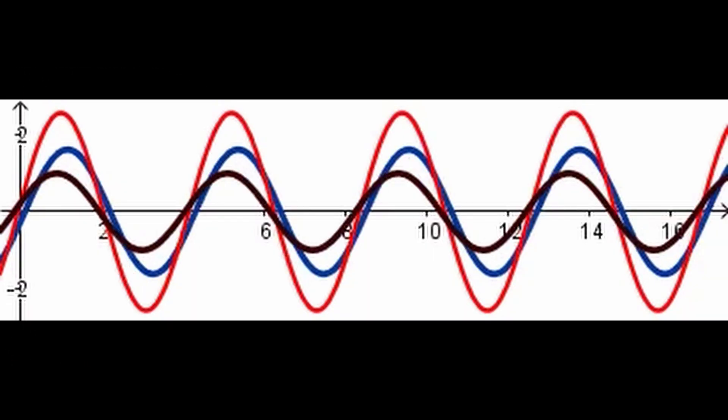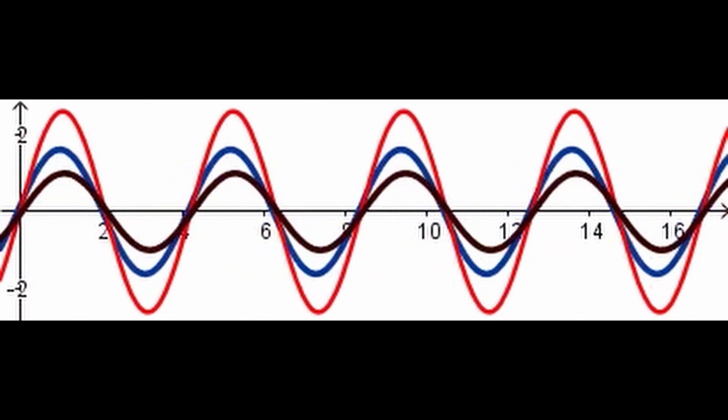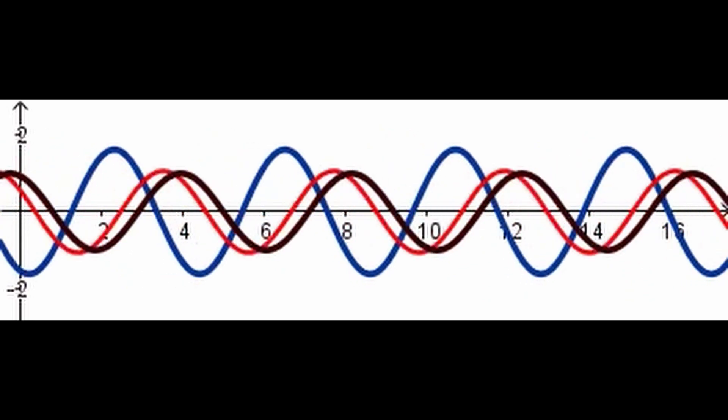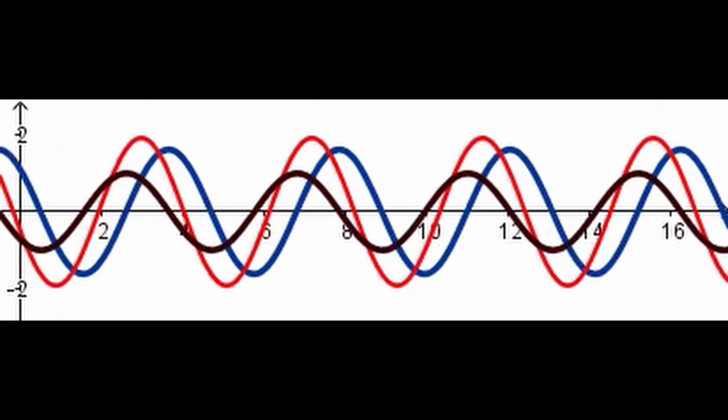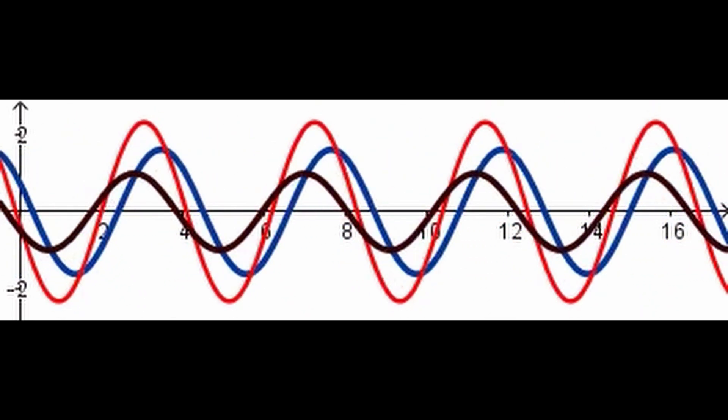E has dimensions ML²/T², and v has dimensions L/T. Substituting these dimensions into the formula, we get ML²/T² = ½M(L/T)². Simplifying, we get ML²/T² = ML²/T². Since the dimensions on both sides are equal, the formula is dimensionally consistent.